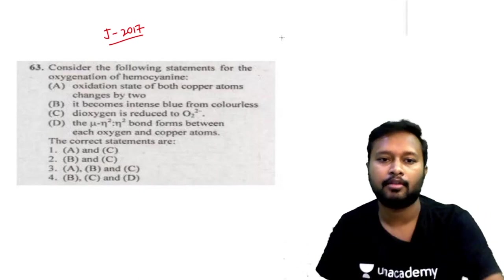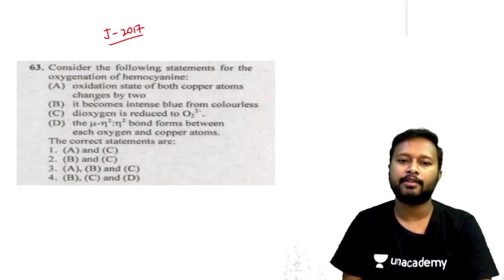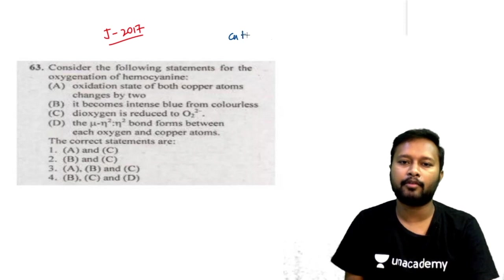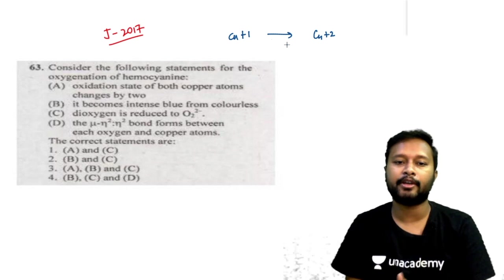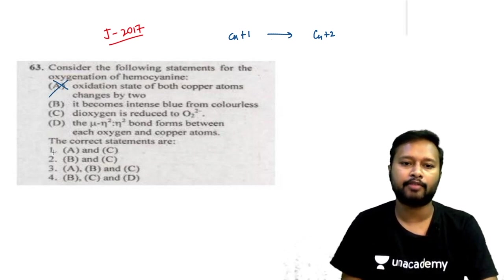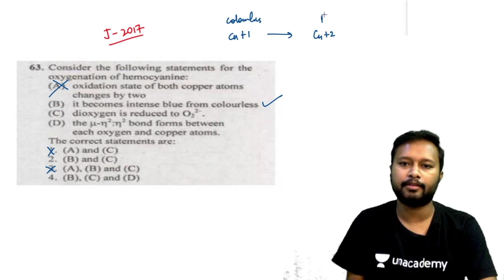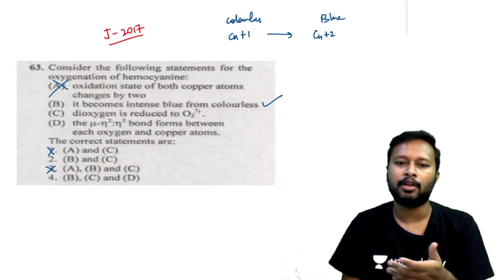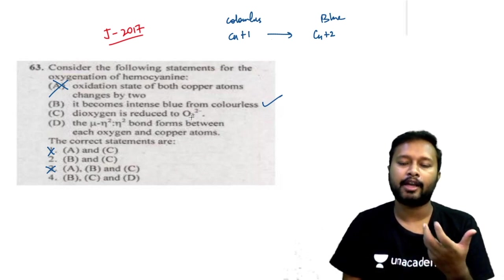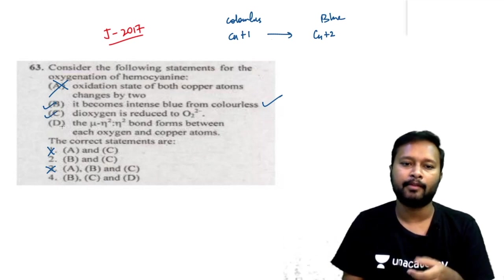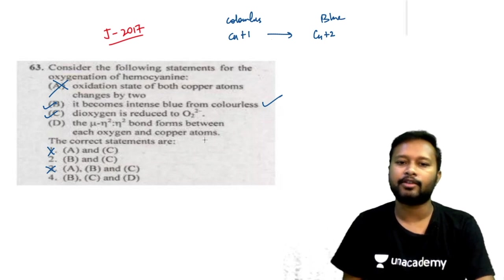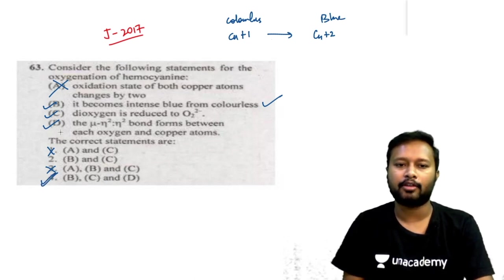Answering the hemocyanin question: statement (a) says oxidation state changes by two — this is wrong, it only changes by one (+1 to +2). So options 1 and 3 are cancelled. Statement (b) — it becomes intense blue from colorless — is correct. Statement (c) — dioxygen reduced to O₂²⁻ — is correct. Statement (d) — μ-η²:η² bond forms — is also correct. So statements b, c, and d are all correct — option d.